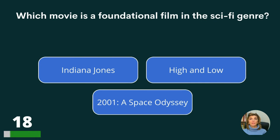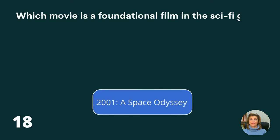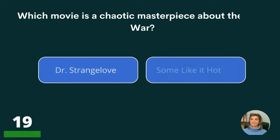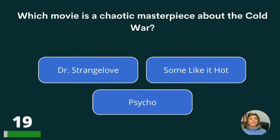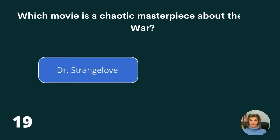Which movie is a foundational film in the sci-fi genre? Indiana Jones, High and Low, or 2001: A Space Odyssey? The answer is 2001: A Space Odyssey. Which movie is a chaotic masterpiece about the Cold War? Dr. Strangelove, Some Like It Hot, or Psycho? The answer is Dr. Strangelove.